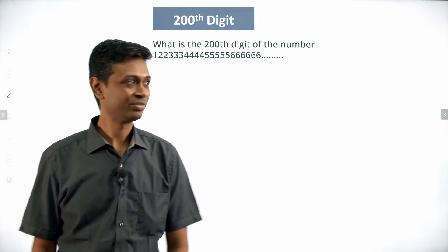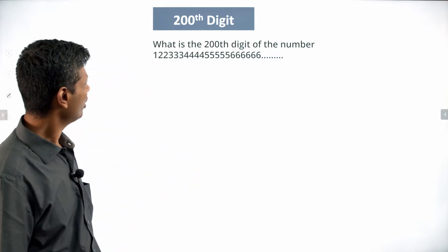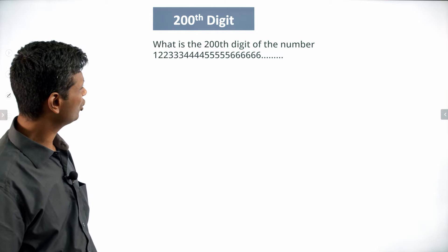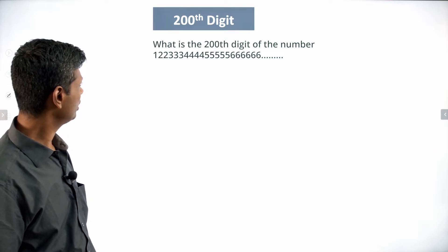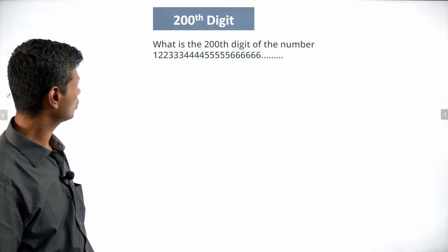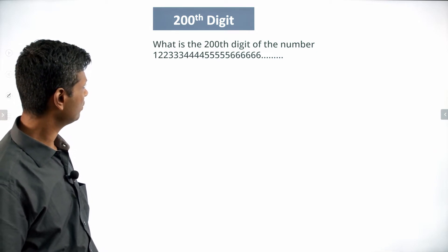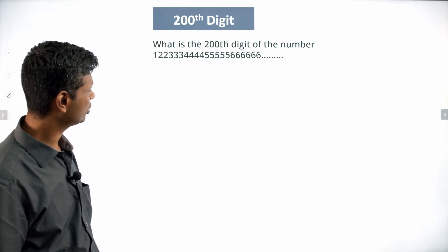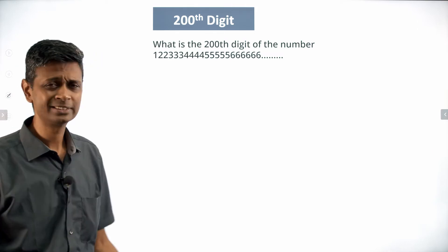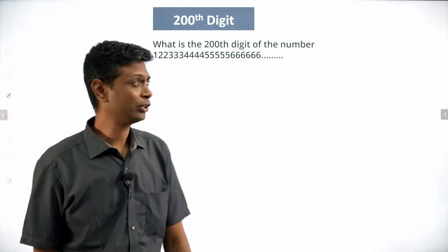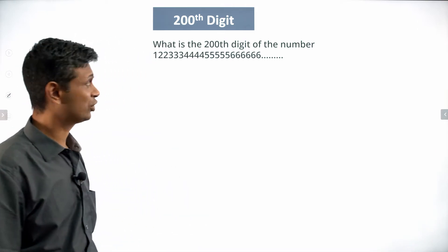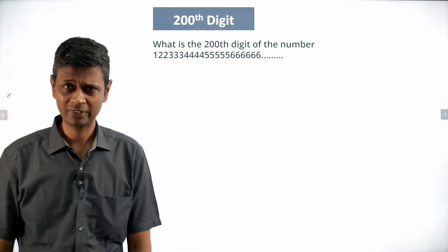What is the 200th digit of the number 1, 2, 2, 3, 3, 3, 4, 4, 4, 4, 5, 5, 5, 5, 5, 6, 6, 6, 6, 6, 6? Nice question. So, we have to find the 200th digit of this number.